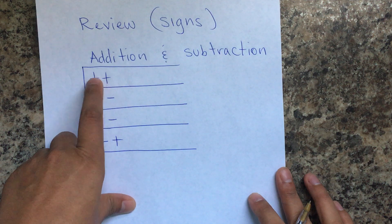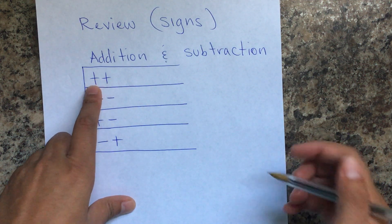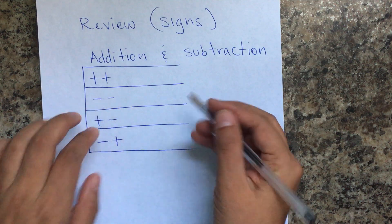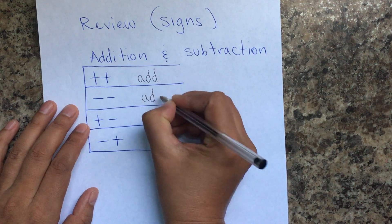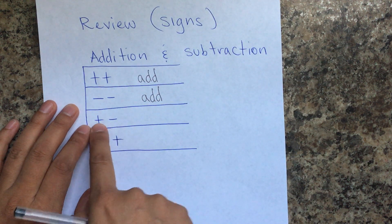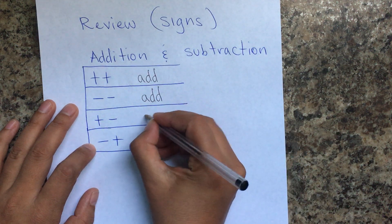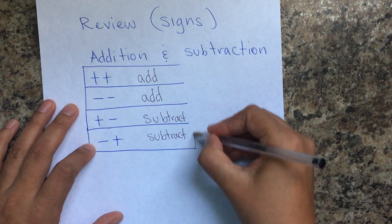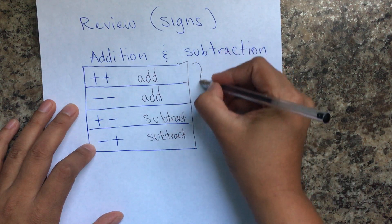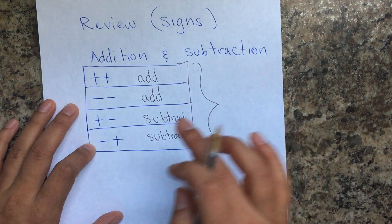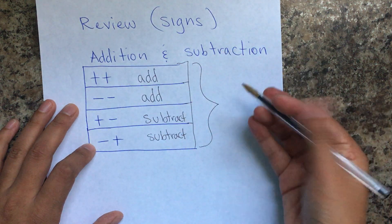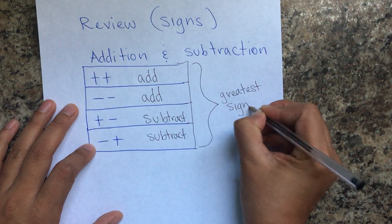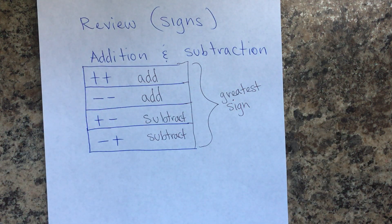If you have two positives, you're adding or putting together two positives. Or if you're also putting together two negatives — si tenemos dos positivos o dos negativos, sumamos. We're going to add. But if the signs are different — you have a positive and a negative, or a negative and a positive — we're going to subtract. In all these instances, we're going to get the sign of the greater one.